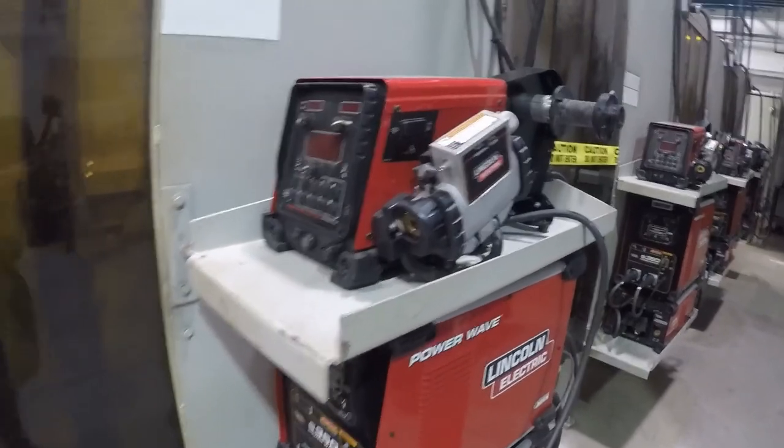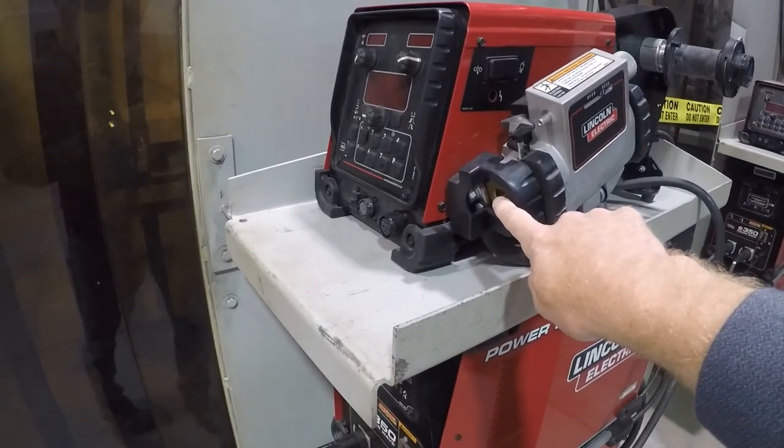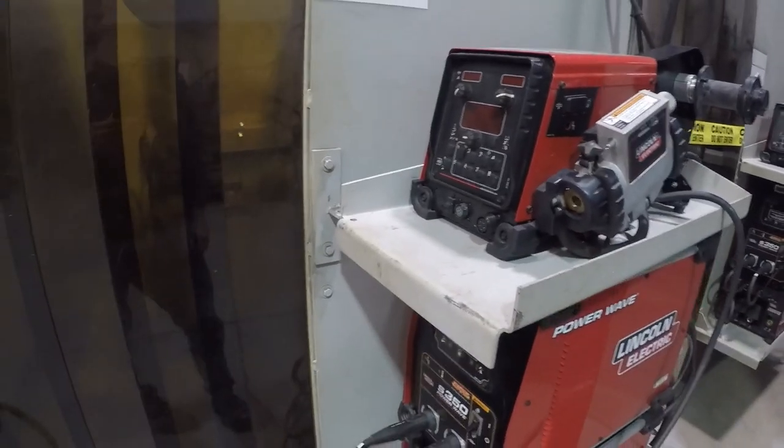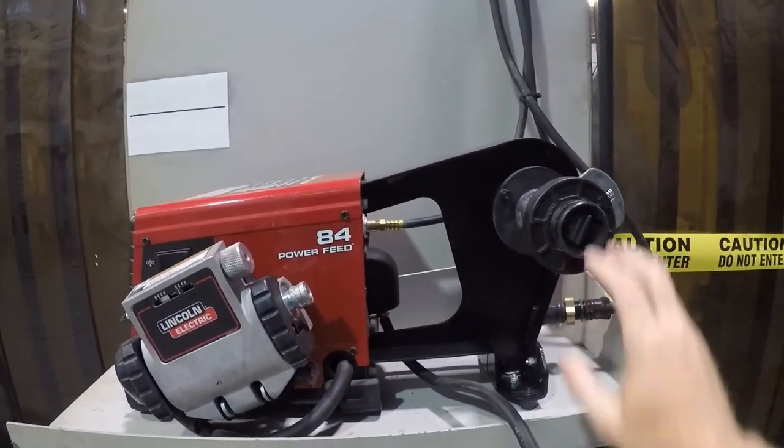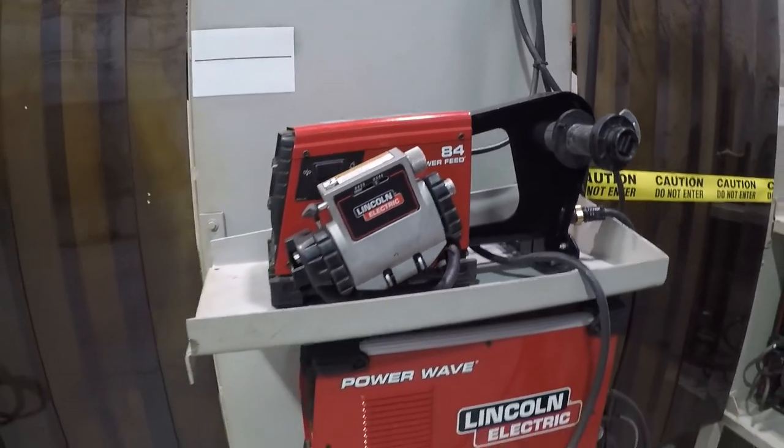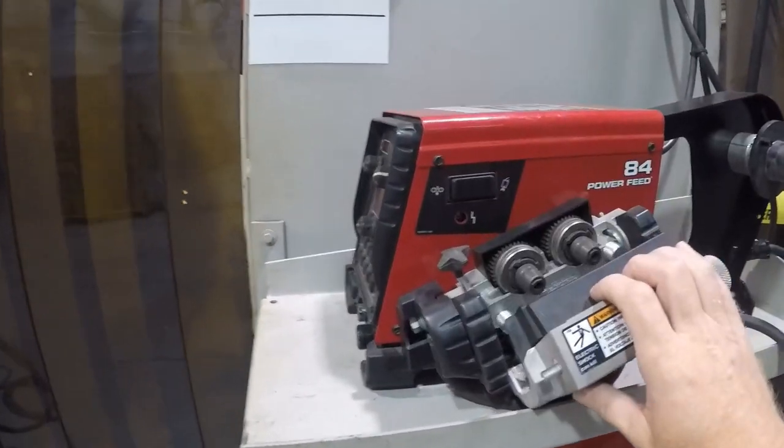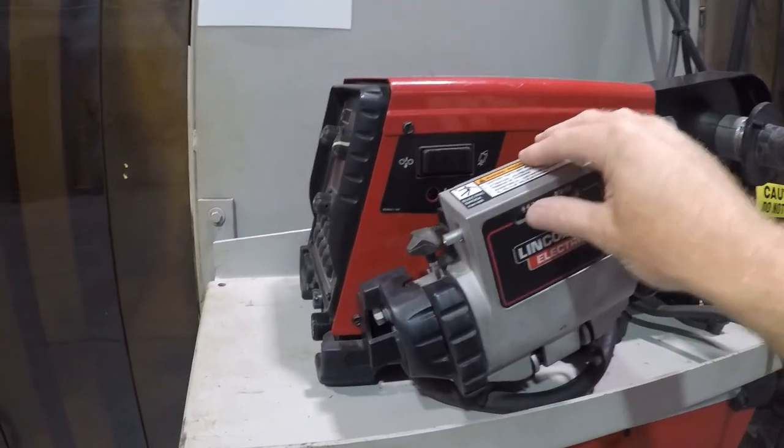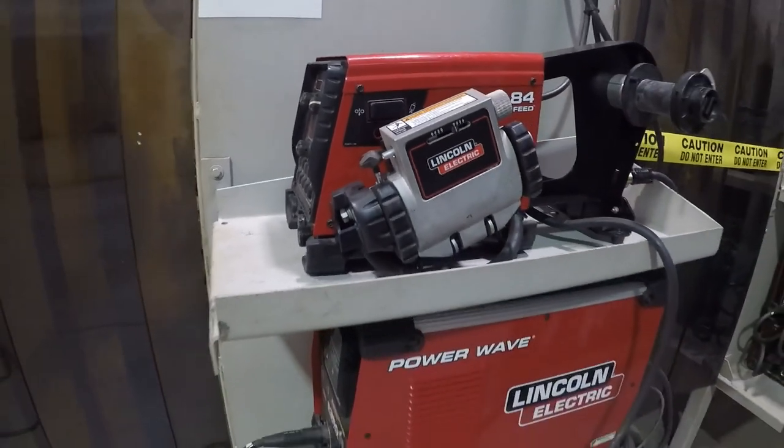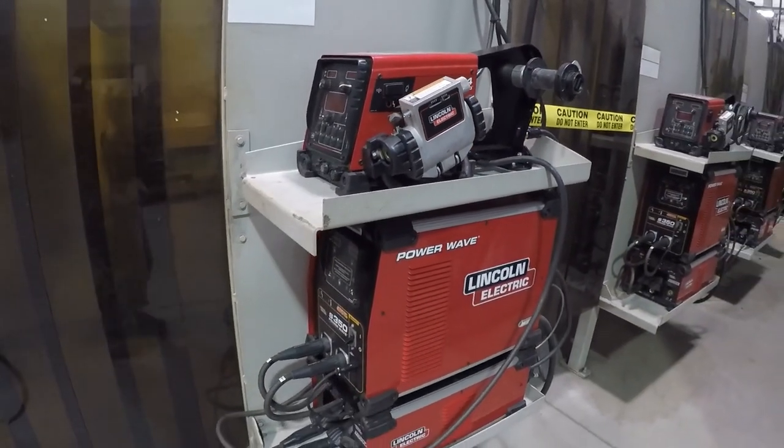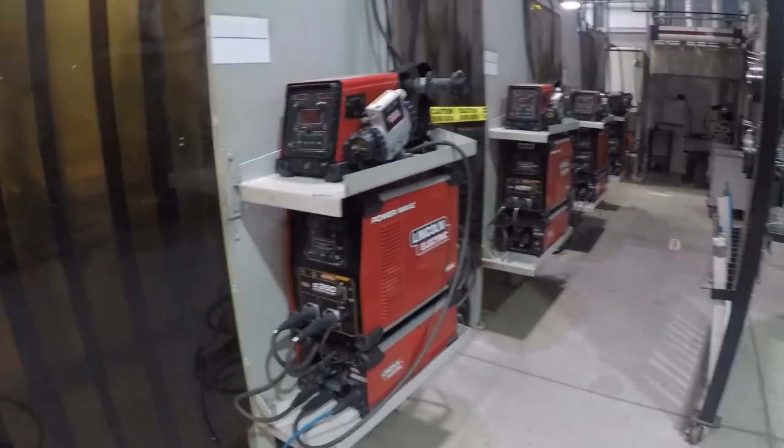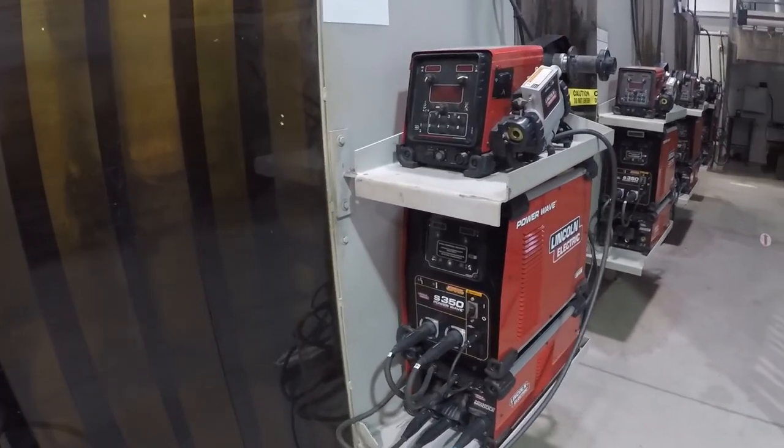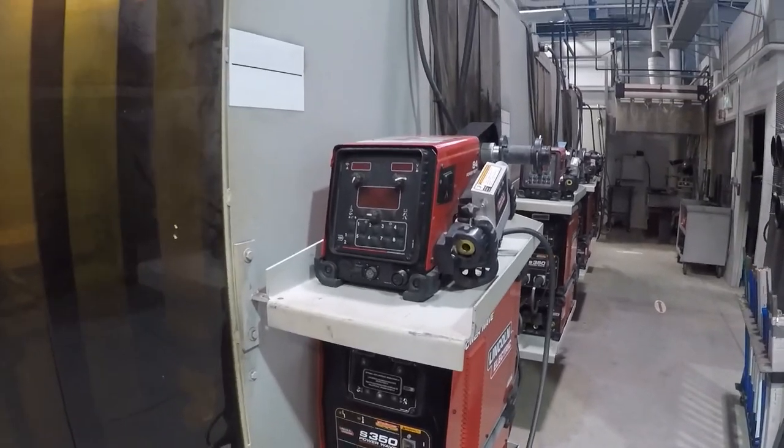This one here is missing the MIG gun and it'll probably be located inside the weld booth. This one here is also missing the wire so we'll have to get that from the tool room and feed that through. A little bit of extra work to set everything up. Welding is easy when everything's set up, but you do have to do some setup and you do have to know what is negative, what is positive, and where all the plugs go.